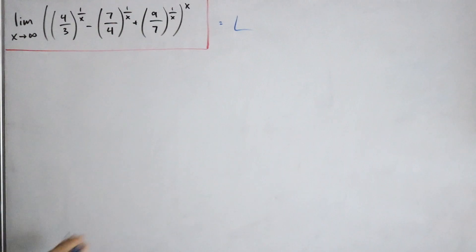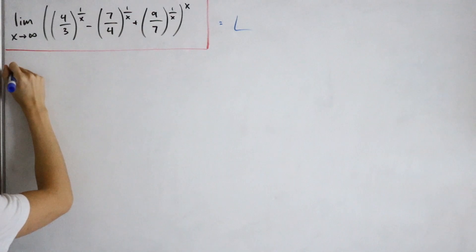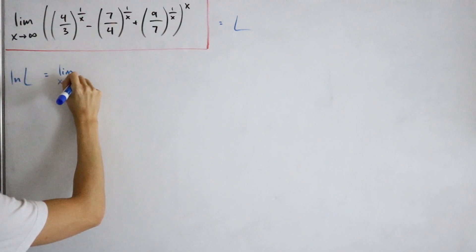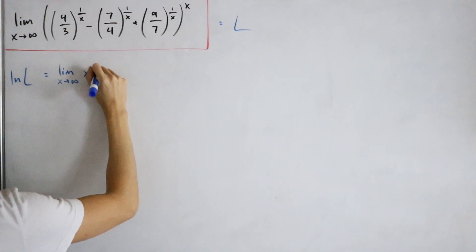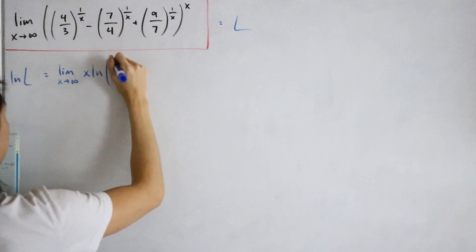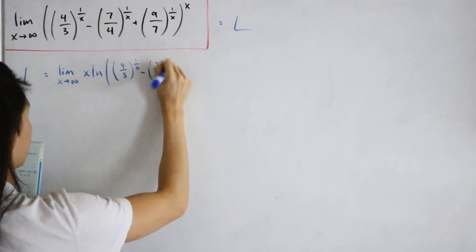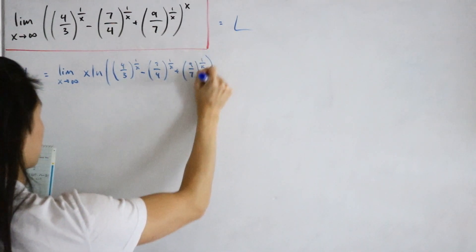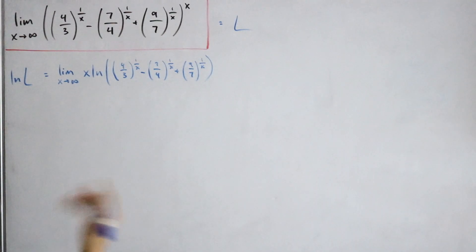Let's call our limit L. Assuming continuity and that the value exists, we take the natural log of both sides: ln(L) equals the limit as x approaches infinity of x times the natural log of the entire quantity — that is, ln of (4/3 to the 1/x minus 7/4 to the 1/x plus 9/7 to the 1/x).